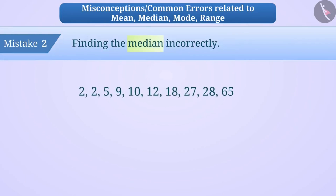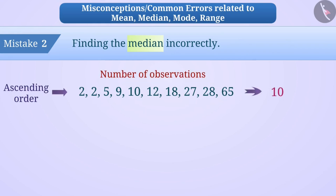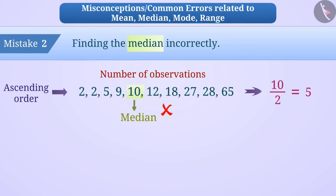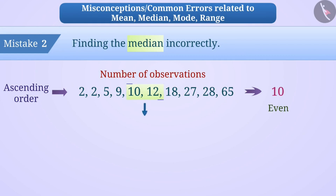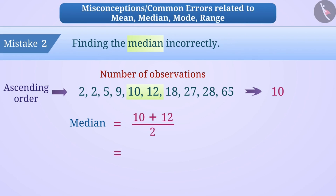Mistake 2: Look at this group of numbers. The observations are in ascending order and the number of observations is 10. Some children divide the number of observations by 2 to find the median's position: 10 ÷ 2 = 5, so they think the median is the number in the fifth place, that is 10 — which is a misunderstanding. When the number of observations is even, we take the mean of the two middle numbers. The two middle numbers are 10 and 12, so the median is (10 + 12) ÷ 2 = 22 ÷ 2 = 11.